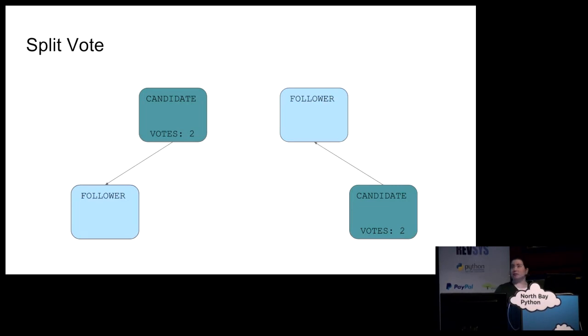Raft can get into a situation called a split vote. And in this instance, a leader cannot be elected based on this configuration. The candidates need a majority of the cluster to vote for them, and split votes can't elect a leader. And in this case, what would happen is, since heartbeats are not being sent, one of the two followers will reach its random election timeout, will revert to a candidate, will update its term, and will send a message to the rest of the cluster, which will hopefully vote for it. And we'll have a new leader again.